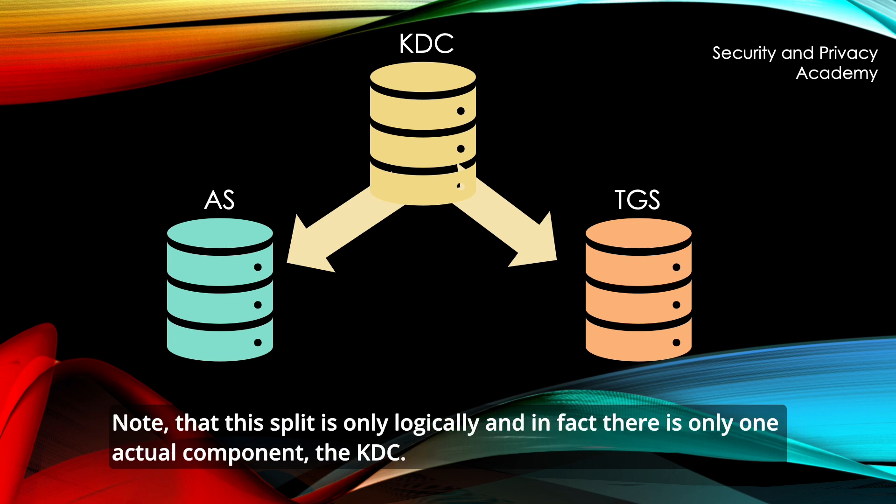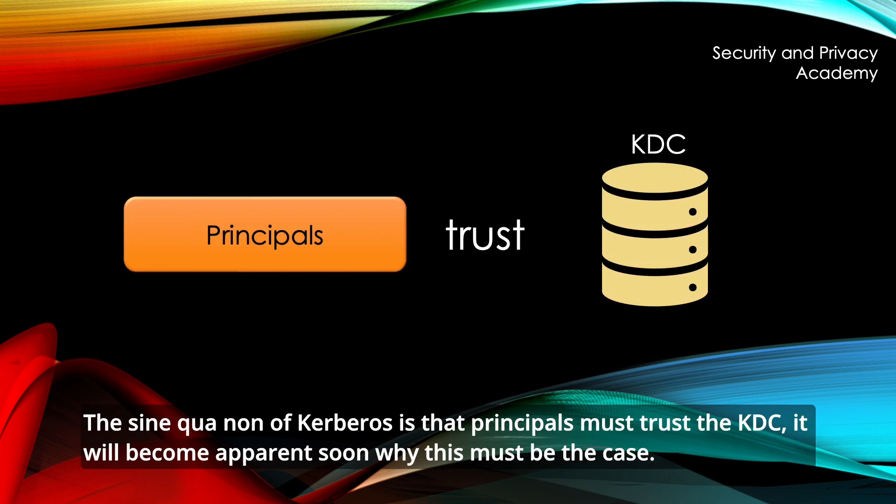Note that this split is only logical, and in fact there is only one actual component: the KDC. The sine qua non of Kerberos is that principals must trust the KDC, and it will become apparent soon why this must be the case.